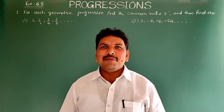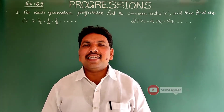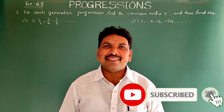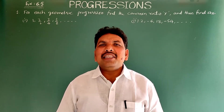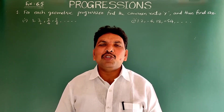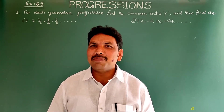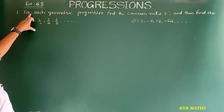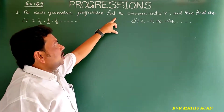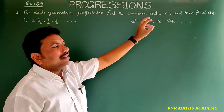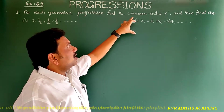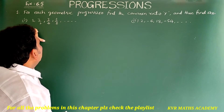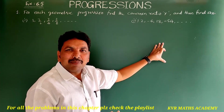Hi, welcome to KVR Mass Academy. In this video, let's discuss the first and second problems in Exercise 6.5 on Progressions in 10th class mathematics. Before doing these problems, please subscribe to my YouTube channel if you haven't yet. Let's do the problems. See the first question in Exercise 6.5: for each geometric progression, find the common ratio r and then find an. Totally four problems are given, so I'll explain one by one.